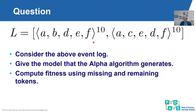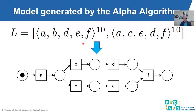This could be an exam question: given an event log, apply the alpha algorithm, and then check compliance between the log and the resulting Petri Net using token-based replay. We apply the alpha algorithm to this event log — we have seen it before — and it generates a model with a problem: at the beginning we make a choice and at the end we try to synchronize, which inevitably leads to a deadlock.